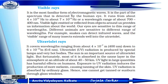Visible rays are the most familiar part of the electromagnetic spectrum because they are detected by the human eye. The frequency range runs from about 4×10^14 Hz to above 7×10^14 Hz, and the wavelength range is 400 to 700 nanometers. Visible light emitted or reflected from objects around us provides information about the world.